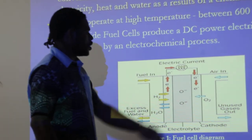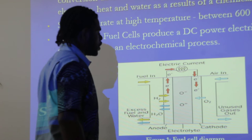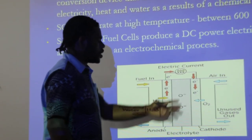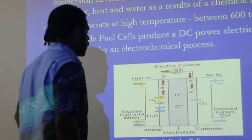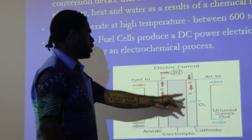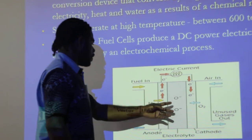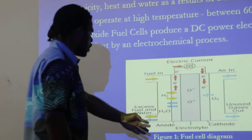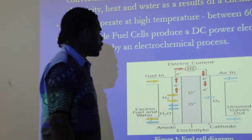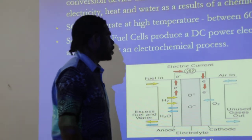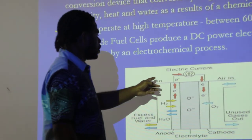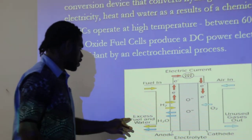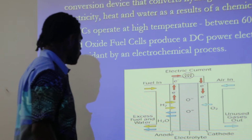From the cathode, the oxygen is reduced by the ion to form an oxygen ion. Throughout the electrolyte, the oxygen ion is driven through, which reacts with the hydrogen fuel at the anode, producing electrons. This generates the electric current, and the rest is the waste, which is the exhaust fuel and water.